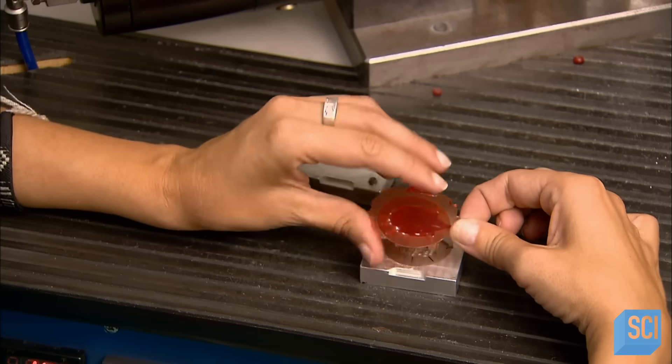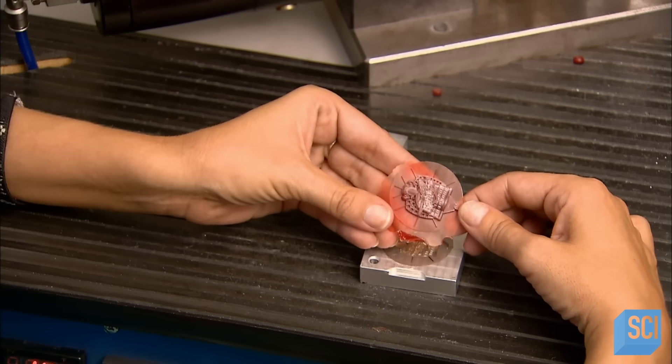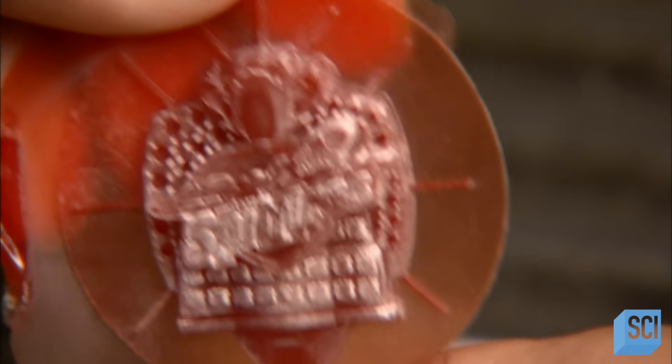Seconds later, they extract a wax model of, in this case, the elaborate top of a championship ring.